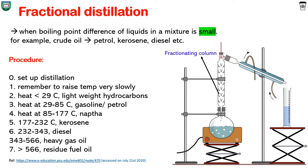Increase the temperature slowly till 29°C and hold there for some time to collect light weight hydrocarbons. Same way to get petrol or gasoline, keep constant heat between 29 to 85°C. Same way keep temperature between 85 to 117°C for naphtha, 177 to 232°C for kerosene.